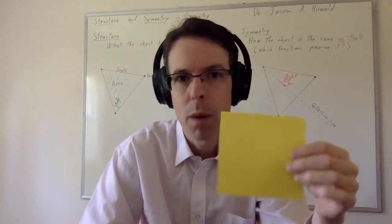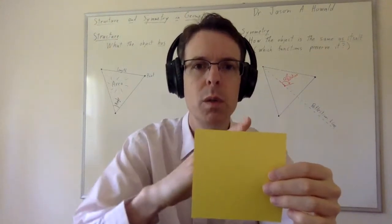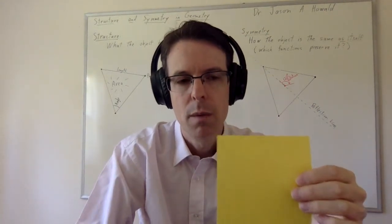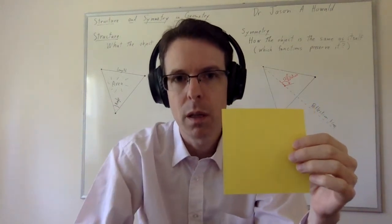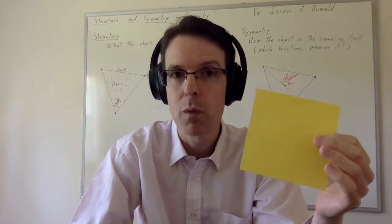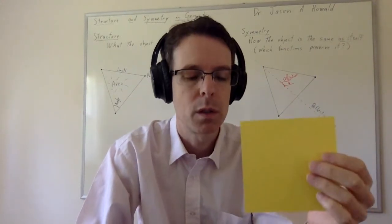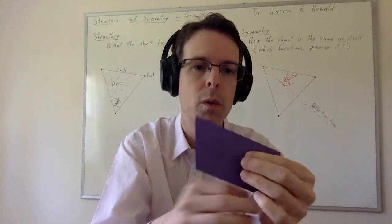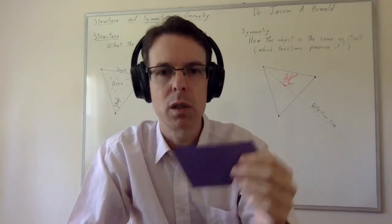We have three rotational symmetries: by 90, 180, and 270 degrees. Then we have two diagonal reflection symmetries and two vertical and horizontal reflection symmetries — that brings us up to seven. And then we have the null operation which leaves everything fixed. Some people like to think of that as a zero-degree rotational symmetry, but it's not really rotation if it leaves everything fixed. The parallelogram has only two symmetries: the 180-degree rotation and the null operation that just leaves everything fixed.